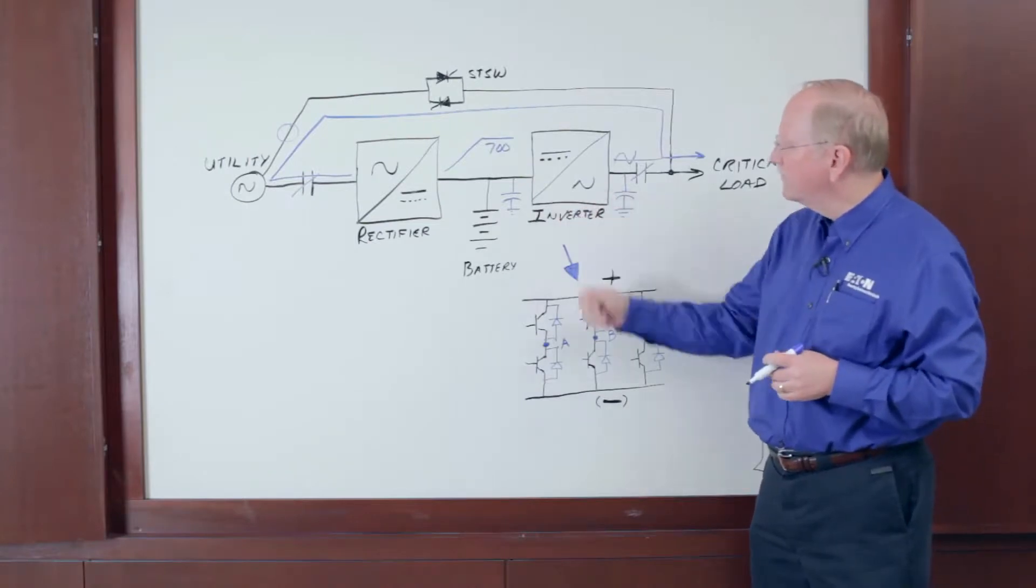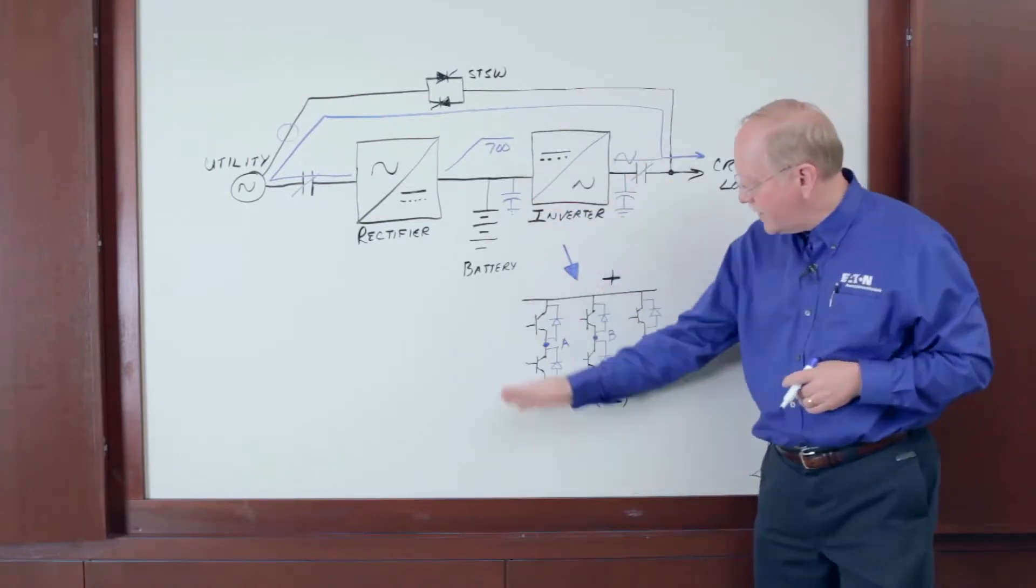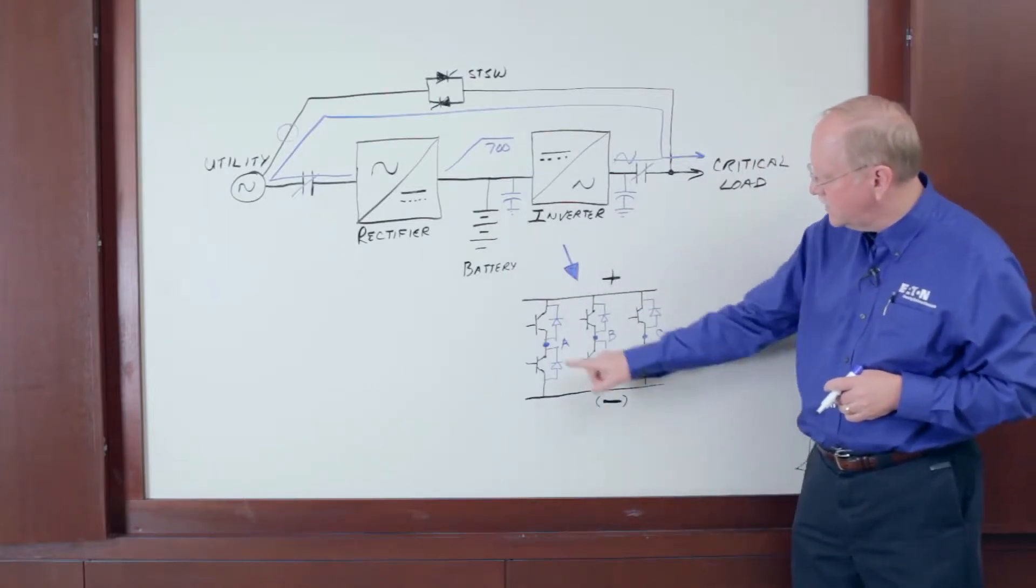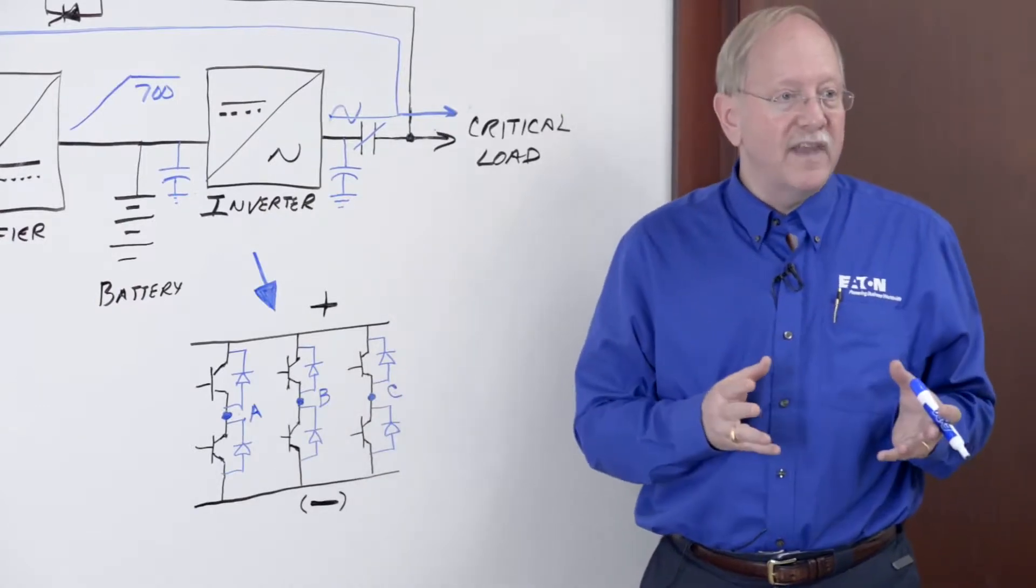Well, if we look at the schematic of the inverter, the inverter's job is to take DC and create AC. Schematically, it looks like this. Here's positive and negative DC, and the inverter transistors create phase A, B, and C, a three-phase AC output.